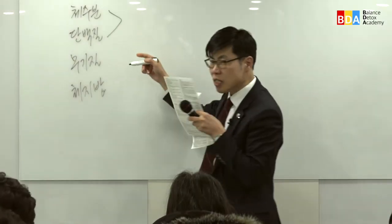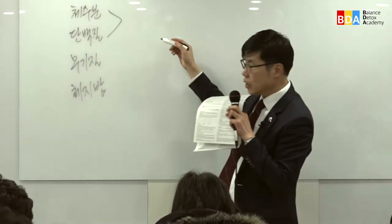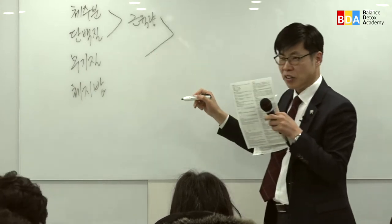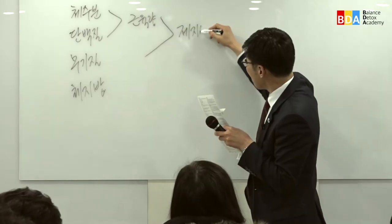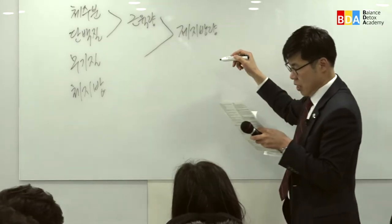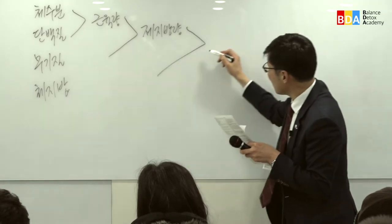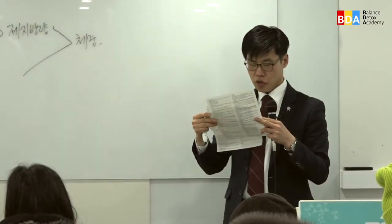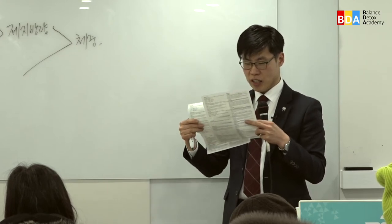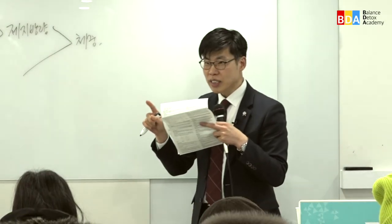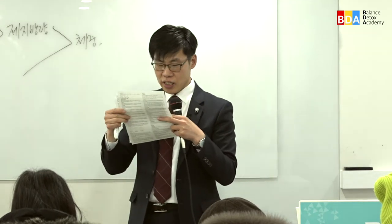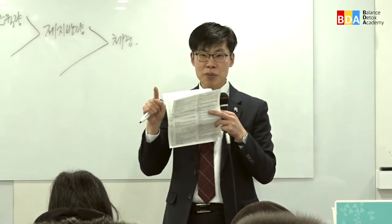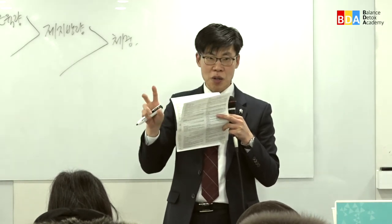체수분과 단백질을 합치면 근육량, 근육량과 무기질을 합치면 체지방량이 됩니다. 체지방량에 체지방을 합치면 체중이 됩니다. 체중이 나오고 골격근량이 있습니다. 골격근은 뼈에 붙어있는 근육이고, 체지방량은 피하지방과 내장지방을 다 합쳐놓은 것입니다.